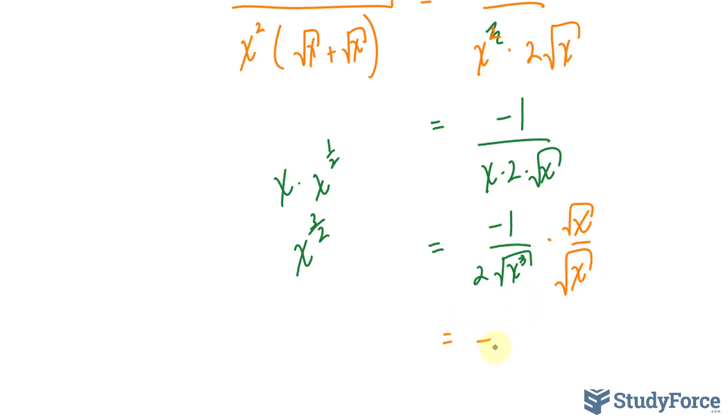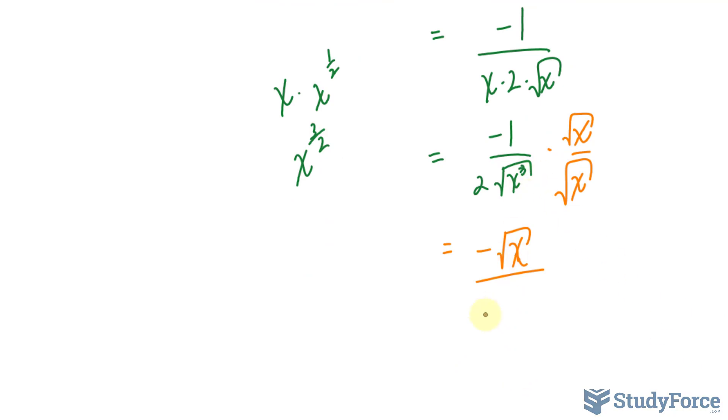You end up with negative the square root of x at the top. And at the bottom, you get 2x because these two multiply together to form x to the power of four. Square root of that is x to the power of two. You should put a two there. So you can either see the answer like this or like that.